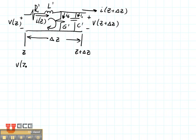V of Z plus R times the current at Z minus, oops, I'm sorry, that's not a plus, that's a minus. V of Z minus the resistance times the current minus L di dt, and that's at location Z minus V of Z plus delta Z is equal to zero.